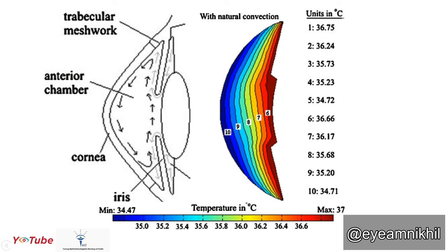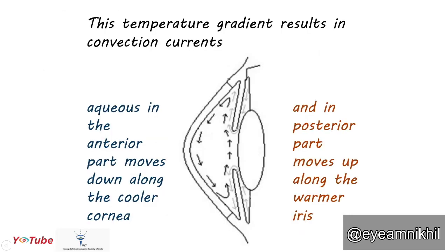Here you can see the temperature gradient across the anterior chamber. This temperature gradient results in convection currents that cause aqueous in the anterior part to move down along the cooler cornea, and that in the posterior part to move up along the warm iris.